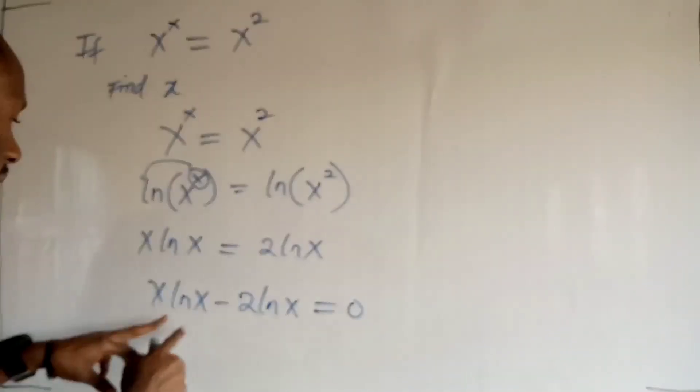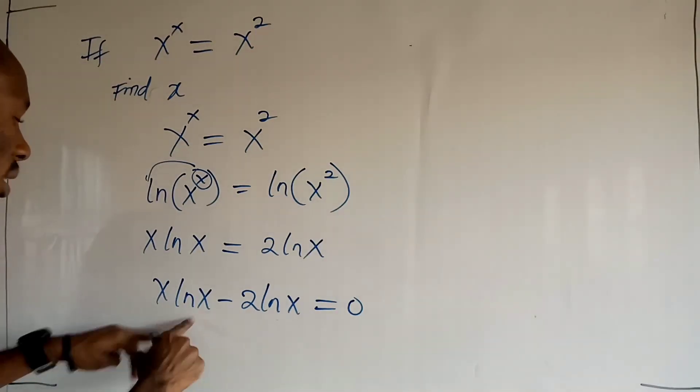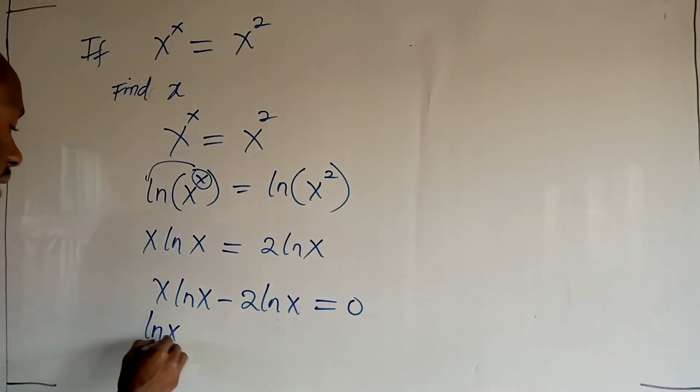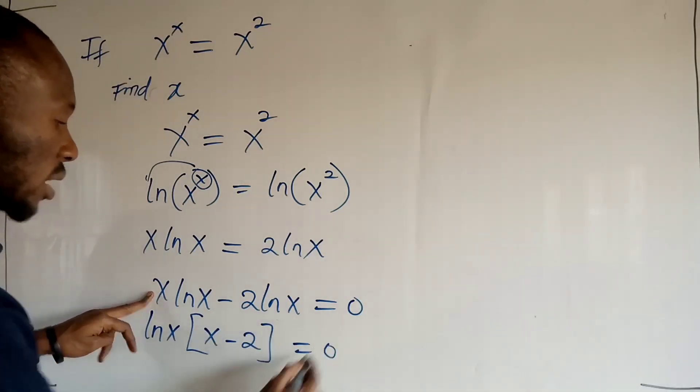Alright, now you can see that ln x and ln x is a common factor here. So I can easily factor out ln x. So I have ln x into x minus 2 is equal to 0.